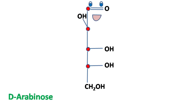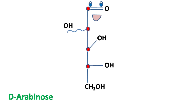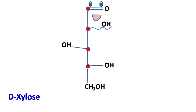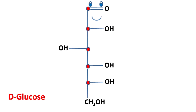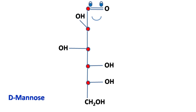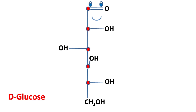Arabinose. Xylose. Adding one more carbon to xylose gives glucose. Mannose. Galactose.